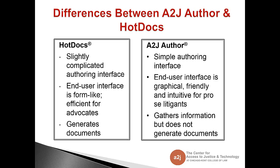First, let's talk about the differences between A2J Author and Hot Docs. Hot Docs has a slightly complicated authoring interface while A2J Author has a simple authoring interface. Hot Docs end user interface is form-like and is more efficient for advocates. On the other hand, A2J Author's end user interface is graphical, friendly, and intuitive for pro se litigants. Hot Docs generates documents while A2J Author gathers information but does not generate documents.